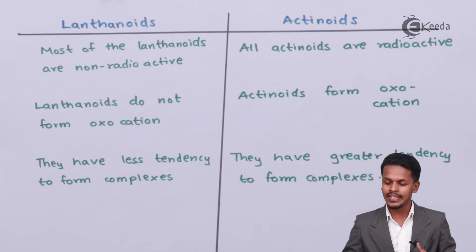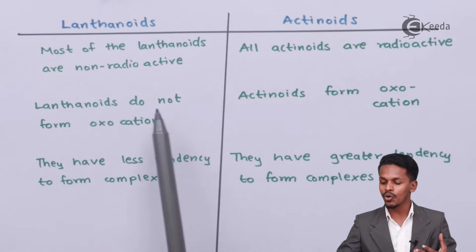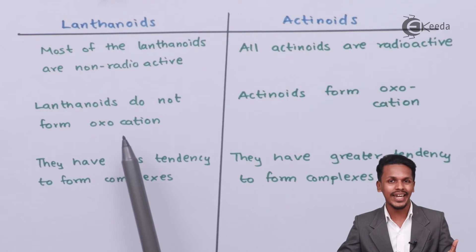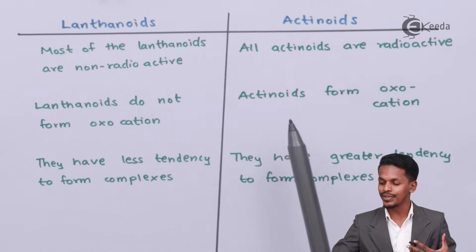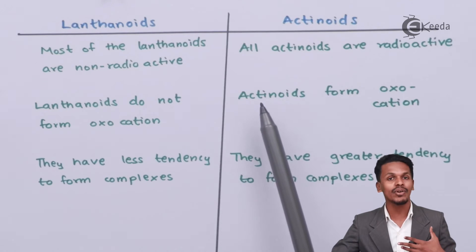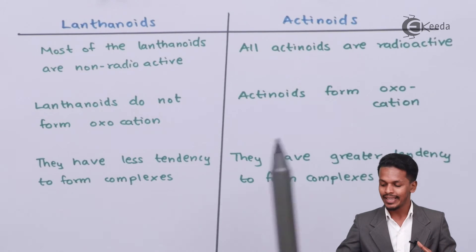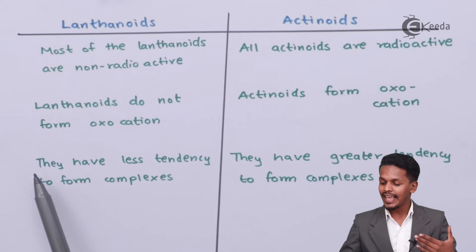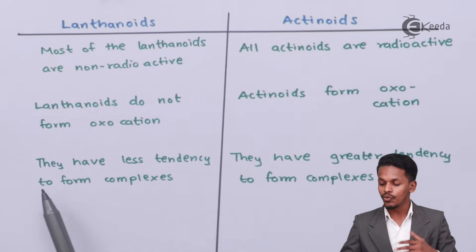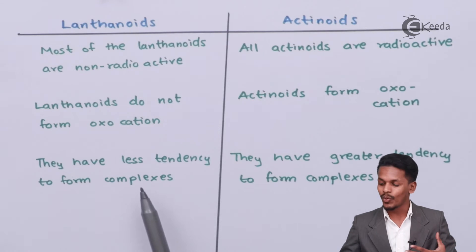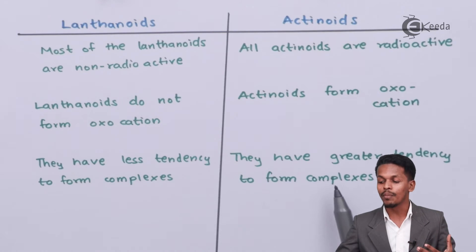Lanthanoids do not form oxo-cations, while actinoids can form oxo-cations. Lanthanoids have less tendency to form complexes, while actinoids have a greater tendency to form complexes.